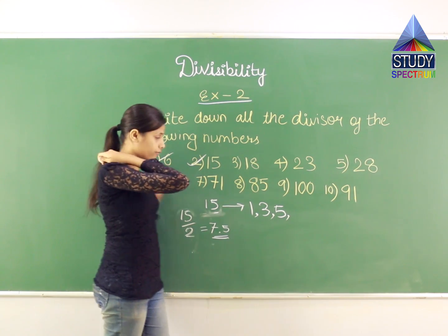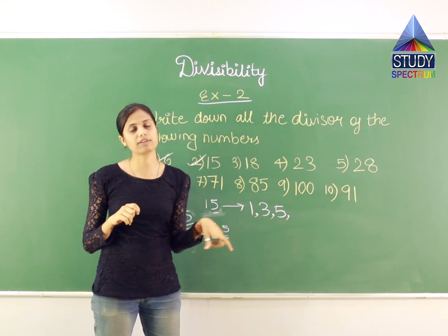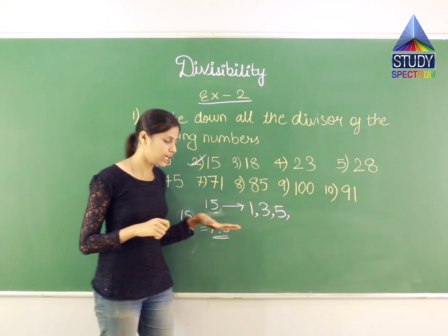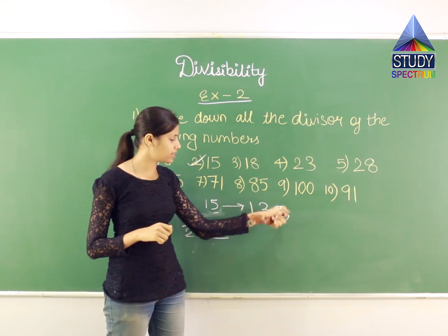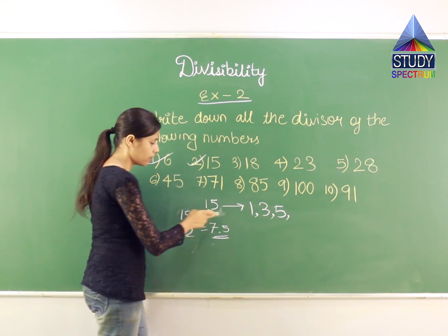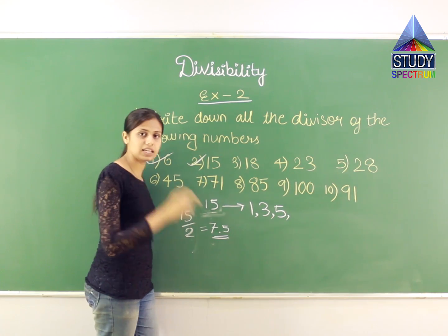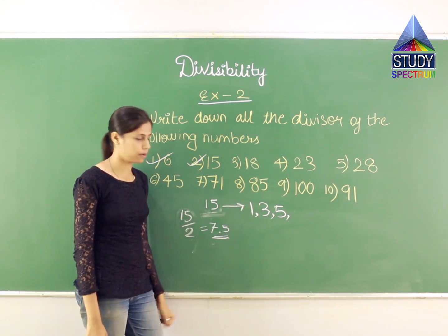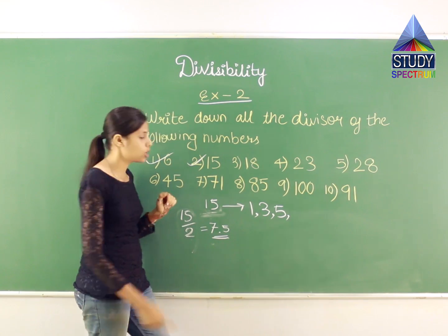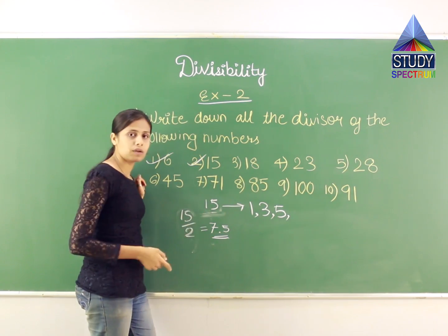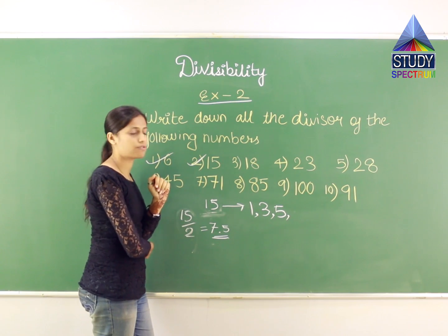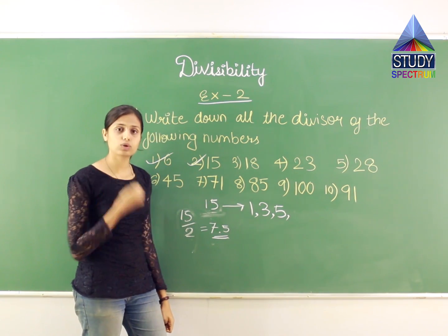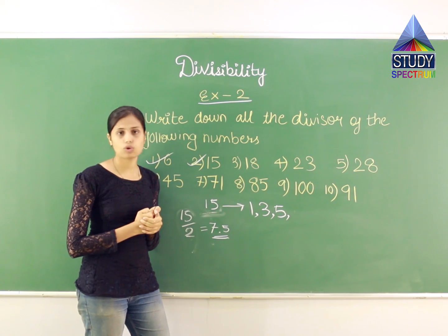What about 6? For a number to have 6 as a divisor, it should also have 2 and 3 as divisors. I have 3, but I don't have 2. So for 15, since it does not have 2 as a divisor, 6 also cannot be a divisor. Now 7: 7×1=7, 7×2=14 — I don't get 15. So 7 is also not a divisor for 15.